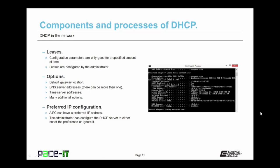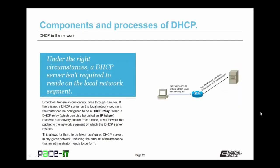When a PC boots up, it does have a preferred IP address — the one it had the last time it booted up. It can request that same IP configuration from the DHCP server. The administrator can configure the DHCP server to either honor that preference or to ignore it.